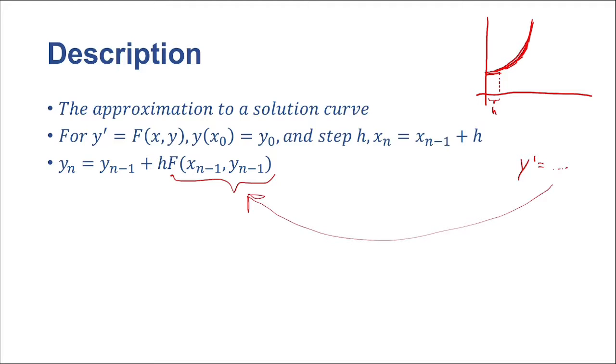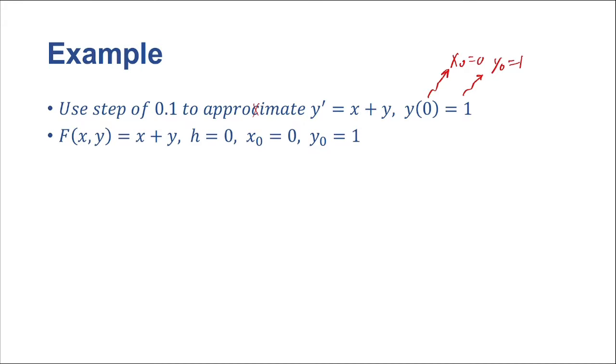Let's try an example. This isn't too bad. We are going to use a step of 0.1 to approximate y prime equals x plus y, and our initial condition is that y of zero is going to be equal to one. All right, so we know at y, so zero, that's our x_0, so x_0 equals zero, and then we know our y_0, so our y_0 is going to be equal to one. Now we can start using our algorithm. In order to find our algorithm, we're just going to lay everything out. So F of x, y is equal to x plus y, so y prime is equal to x plus y, that should be easy. Our little h step is 0.1, and then our initial x is zero and our initial y is one.